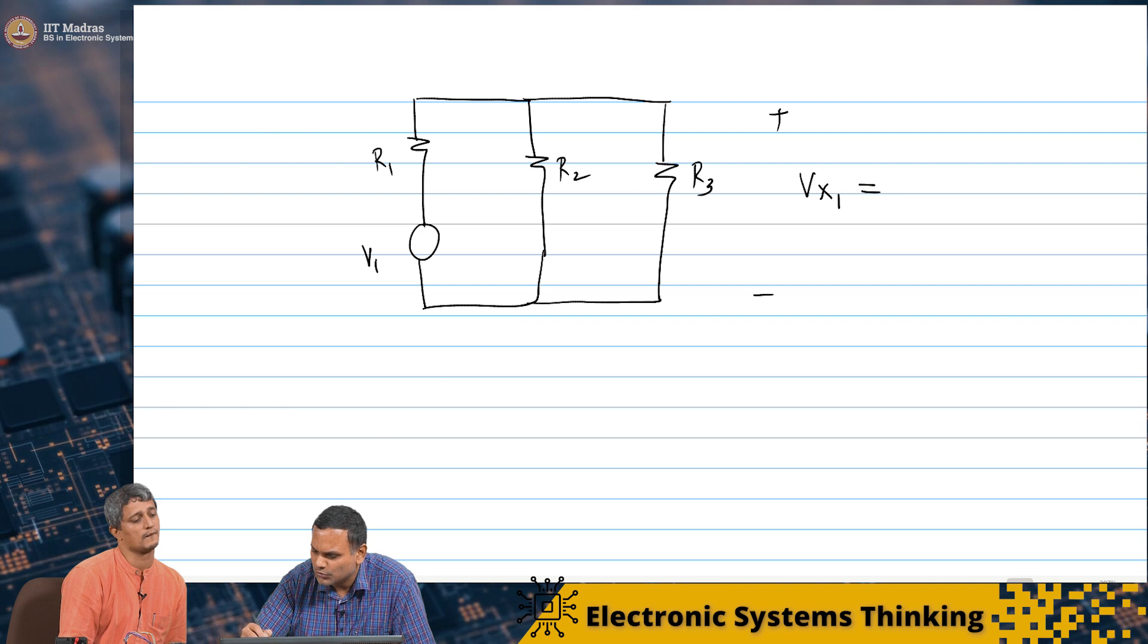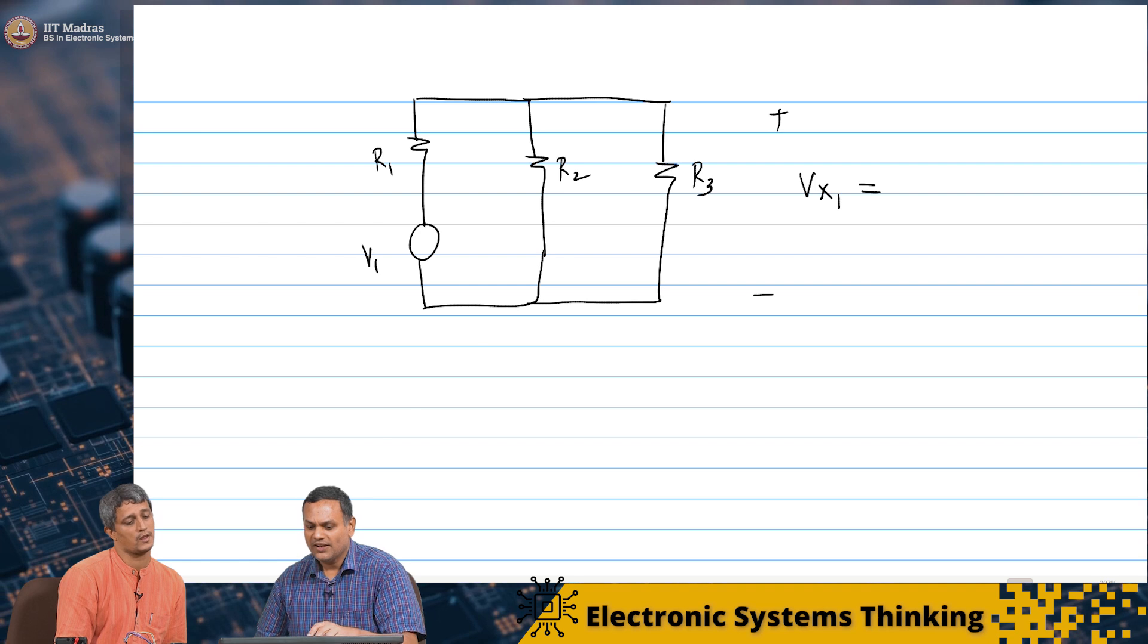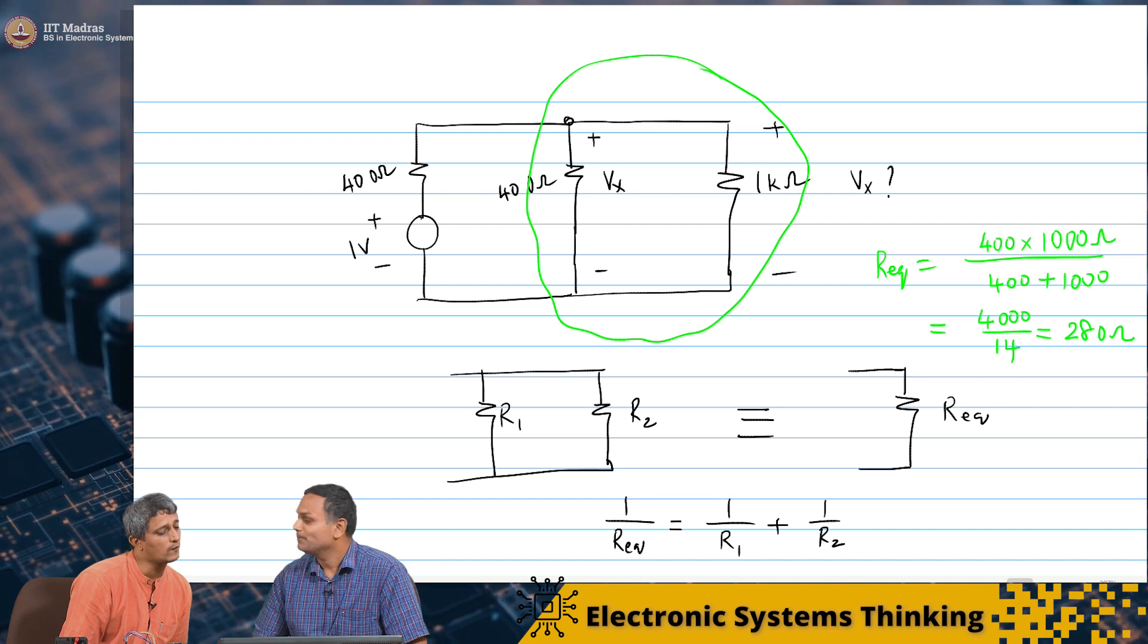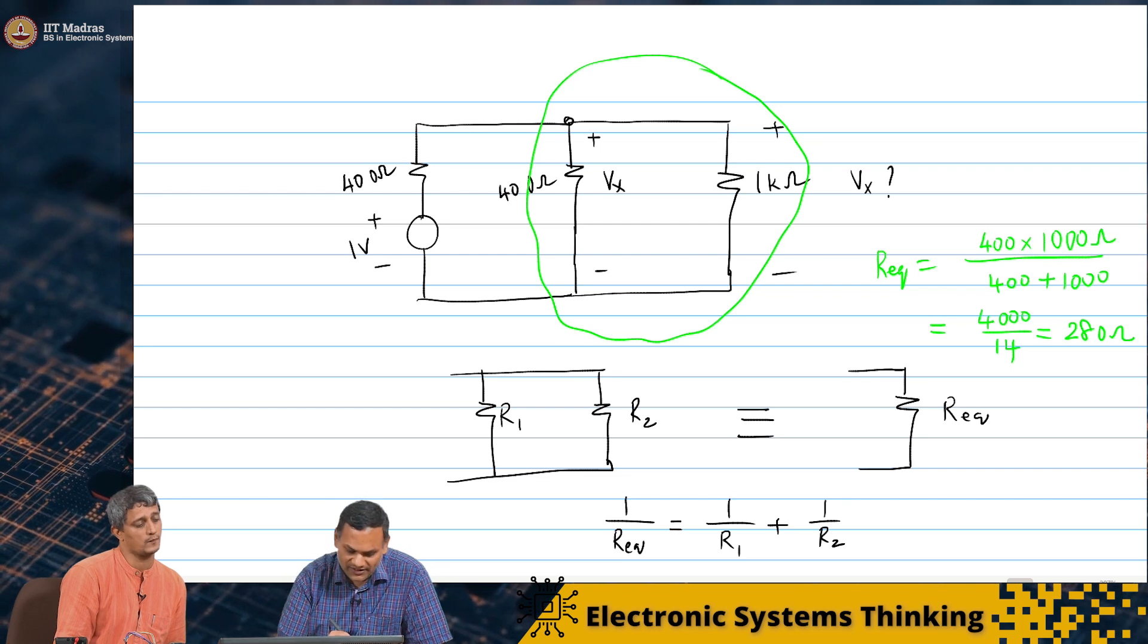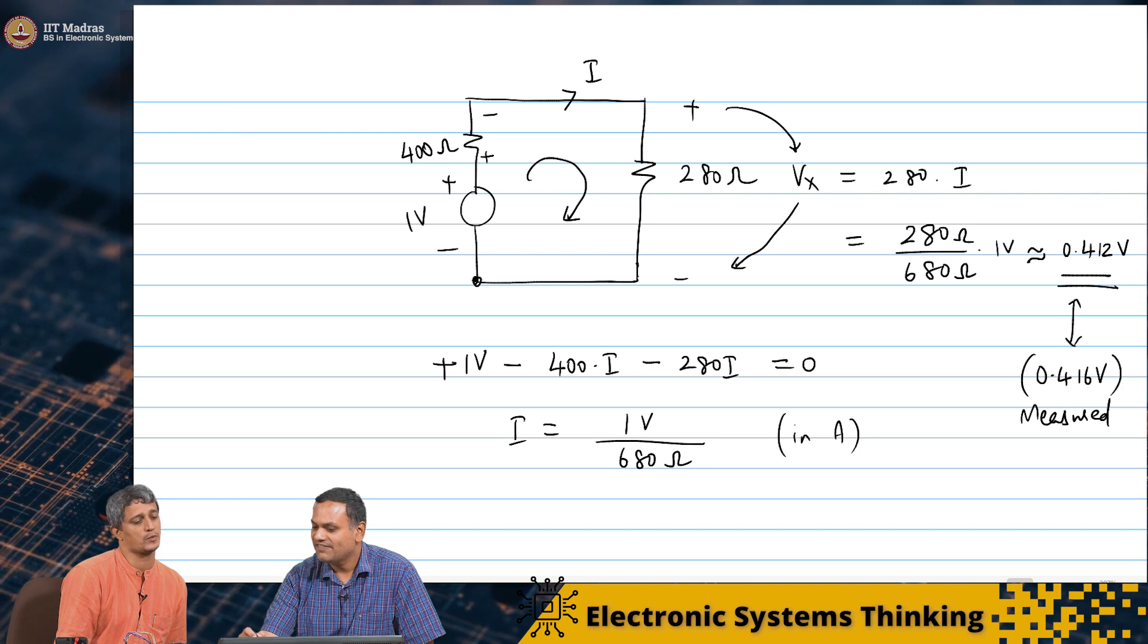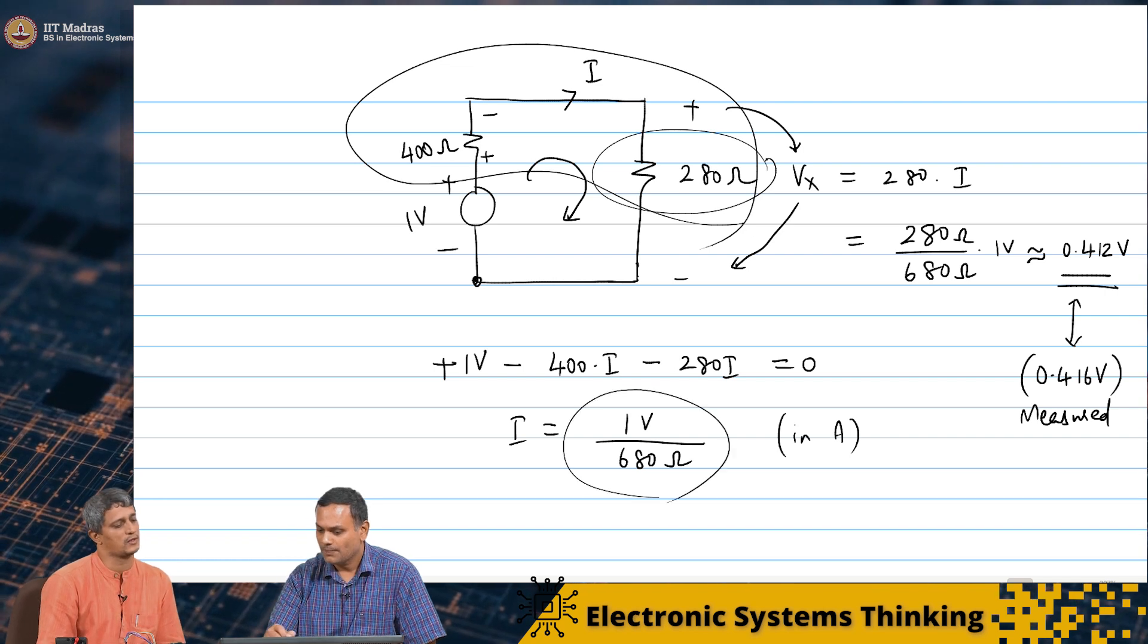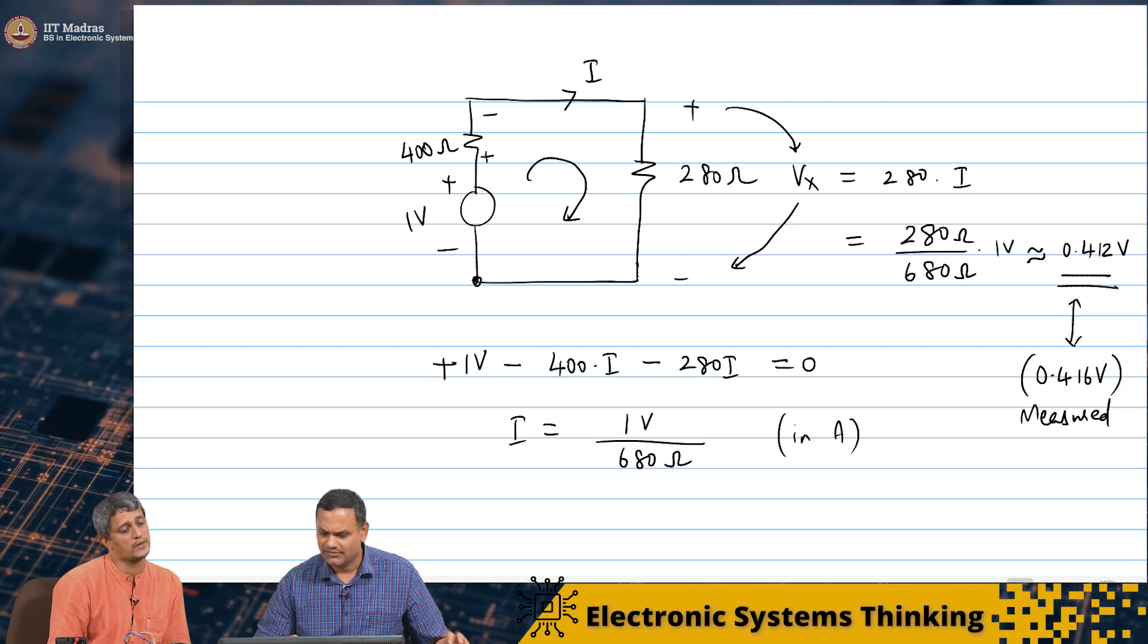So we did R2 parallel R3, and then the voltage divider between R1 and that combination. That is correct. Maybe we can just write down the expression. So what we will do, we said Vx1. We said there was a voltage division. So we saw, maybe I will go back to that page so students remember that. Because we did the case when this was 0. What we did, we first found out the equivalent resistance. Then what we did, we did a voltage divider. And then we found out that it was simply this resistance divided by the sum of the resistors.